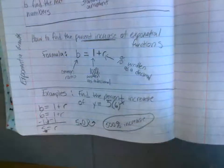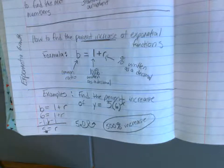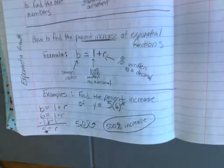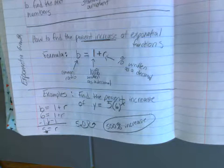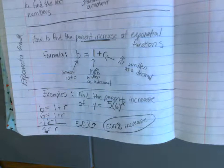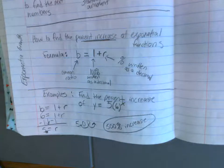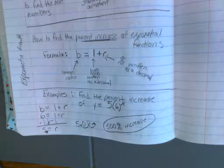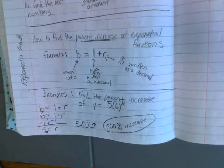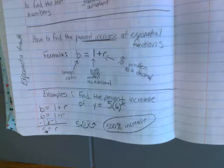Sometimes people get confused — how do you have more than 100%? There are some things that can't be over 100%, like I can't give more than 100% of my time. But I can give you more than 100% of $2 — if the starting amount is $2, then $5 is more than 100% of that. So in some cases, percentages over 100% are feasible and possible.